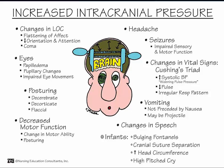Cushing's triad is bradycardia, increased systolic pressure, and increased pulse pressure, and could indicate brain stem ischemia leading to cerebral herniation. Diuretics are often prescribed to prevent increases in ICP, anticonvulsants are prescribed to prevent or control seizures, and antibiotics are prescribed to eradicate bacteria.